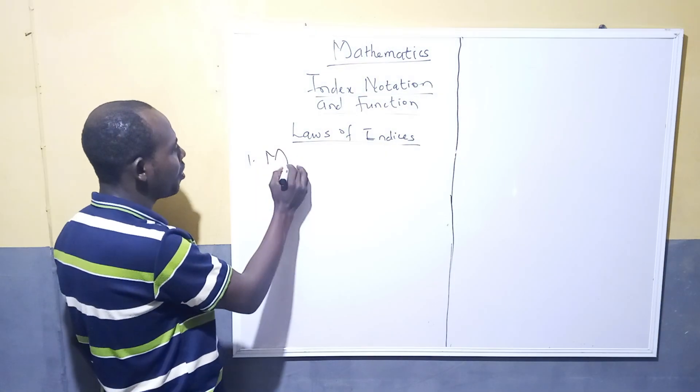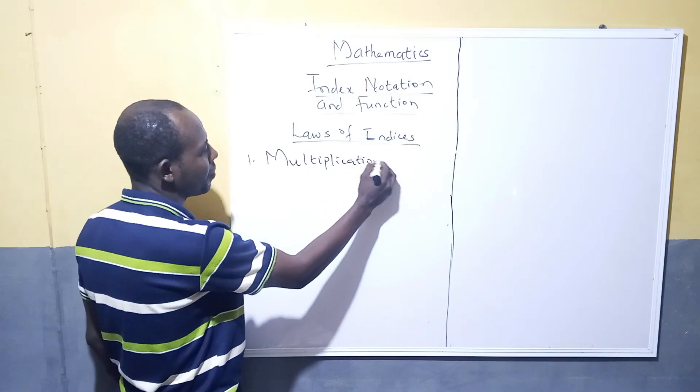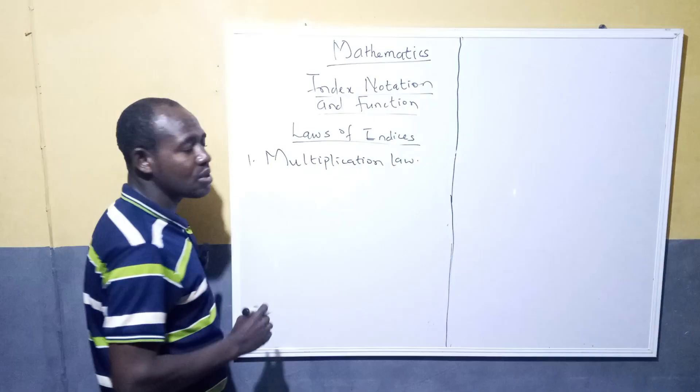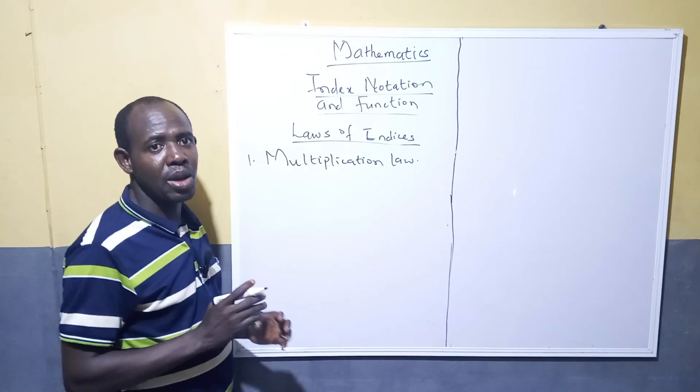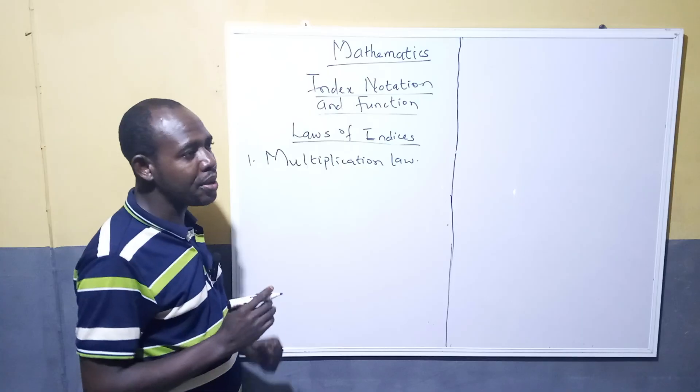Now I'll be explaining some of the laws to you. Number one law is called multiplication law. This law states that when you are multiplying numbers whose bases are the same, then the power will be added.